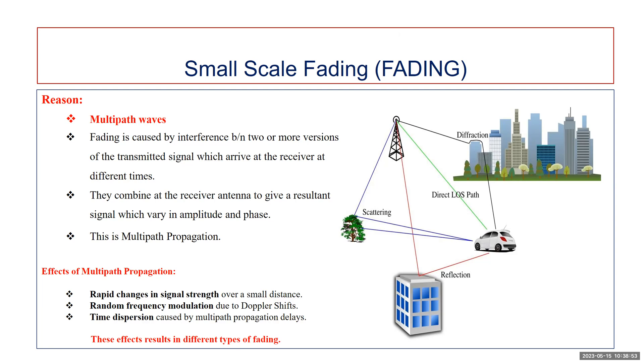All these cases occur in urban areas because the height of mobile antennas are well below the height of surrounding structures, so there is no single line of sight path to the base station. Even when a line of sight exists, multipath still occurs due to reflections from the ground and surrounding structures. Similarly, it can happen due to scattering and diffraction effects encountered in the environment.